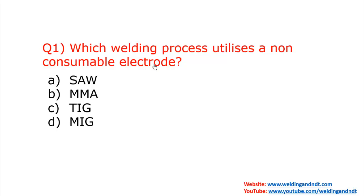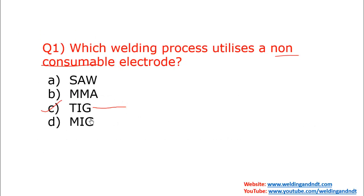Our first question is: which welding process utilizes a non-consumable electrode? The answer is TIG welding. In TIG welding, a tungsten electrode is used and that tungsten electrode is not consumed during the welding. It is used to generate the arc only. The correct answer is TIG welding.